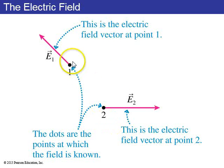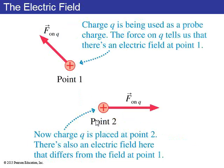So here's point 1 and point 2. Here's the electric field at point 1, E1. Here's the electric field at point 2, E2. If you put a positive test charge at point 1, it'll experience a force in the direction of the electric field. If you put a positive test charge at point 2, it'll experience a force also in the direction of the electric field at that point.